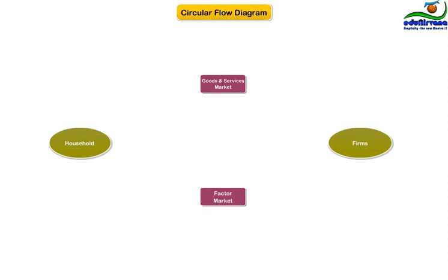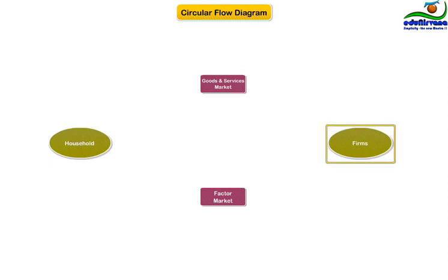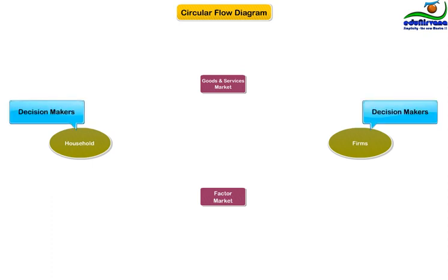This diagram is a classical view of how the two entities interact. The circular flow diagram offers a simple way of organizing all the economic transactions that occur between households and firms in the economy. The economy has two types of decision makers: households and firms.